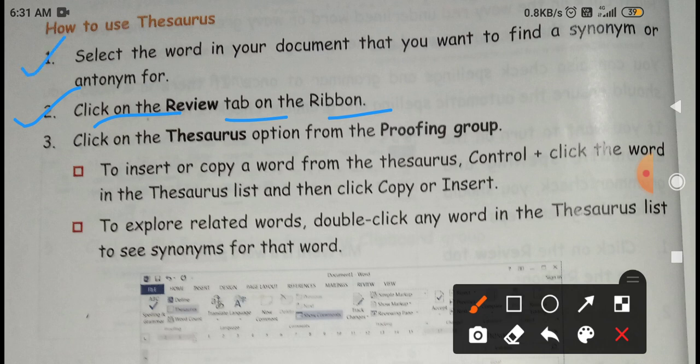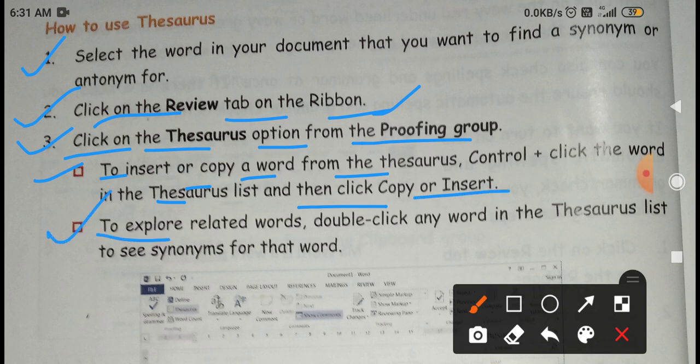After selecting, you will click on review button on the ribbon. Number three, click on thesaurus option from the proofing group. To insert or copy a word from thesaurus, control plus click the word in the thesaurus list, then click copy or insert. Next, to explore related words, double click any word in the thesaurus list.